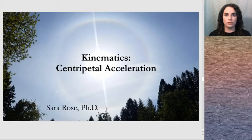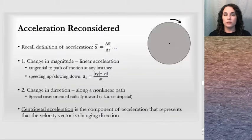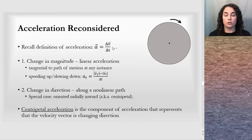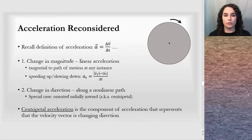This is a lesson on centripetal acceleration in the kinematics unit, following a lesson on the basics of circular motion. Centripetal acceleration requires us to go back to the definition of acceleration, where we look at the change in the velocity vector over the change in time. We recognize that velocity is a vector, and vectors have two properties: magnitude and direction.